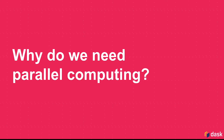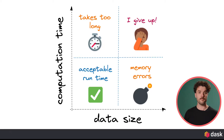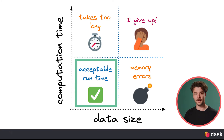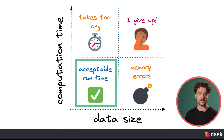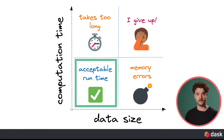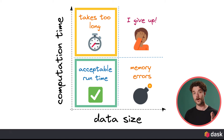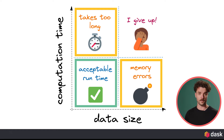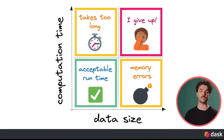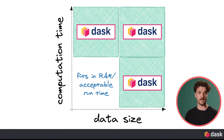Now, you might be wondering, why do we even need parallel computing? Why should I care? In this diagram, you see four quadrants. If you're in the bottom left quadrant, your data size is manageable and your computations are running fast enough — in this case, you don't need Dask. You're fine working with Pandas, NumPy, or whatever other Python data library you like to use. However, if your data size starts to increase, or your computations are running slower than you'd like, or you're running into both of those problems at the same time, then you should probably give Dask a try.